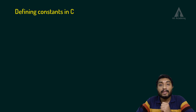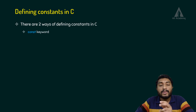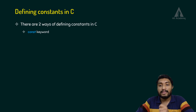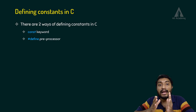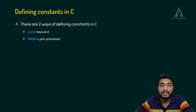We can define constants in C programming in two ways. The first one is using the const keyword, and the second one is using the hash define preprocessor command.